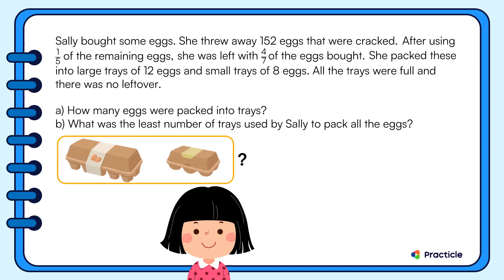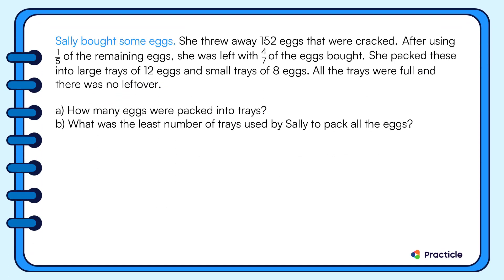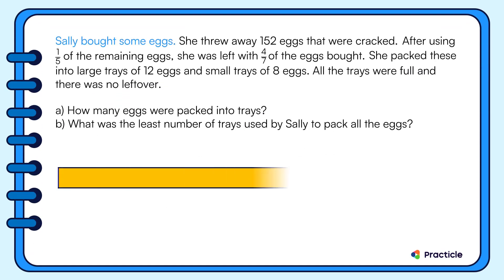This question looks pretty challenging, but I'm sure we can solve this. Sally bought some eggs — let's draw a bar. This bar represents all the eggs that Sally bought. She threw away 152 cracked eggs, so let's use a part of our bar to represent that.